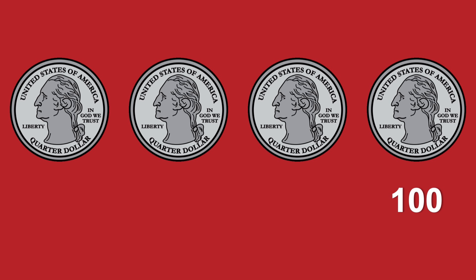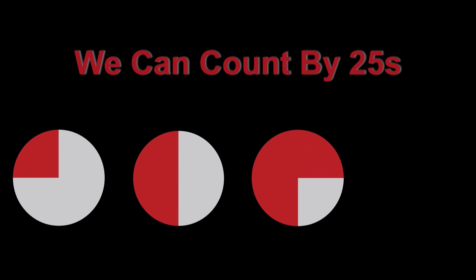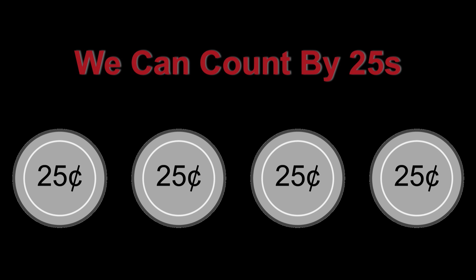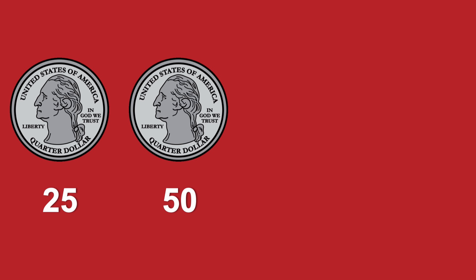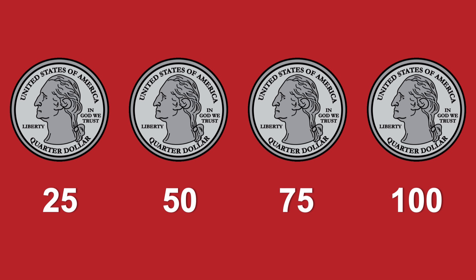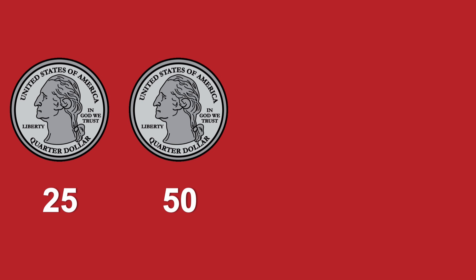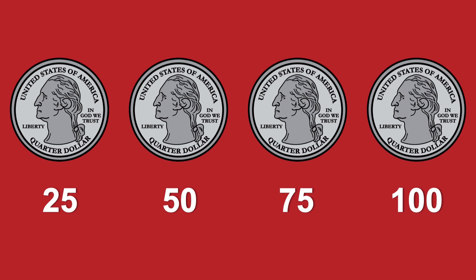In the second way, all four quarters are out there at the start, and we count up to find the total. This would be useful if your student's goal is not to give you a certain amount, but to be given some coins and they have to determine the amount of money that they have: 25, 50, 75, 100.